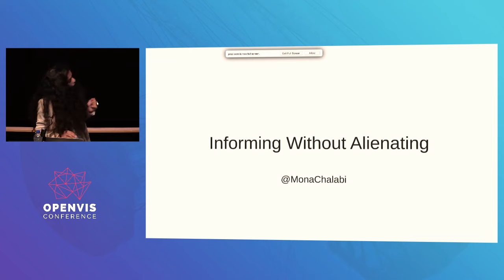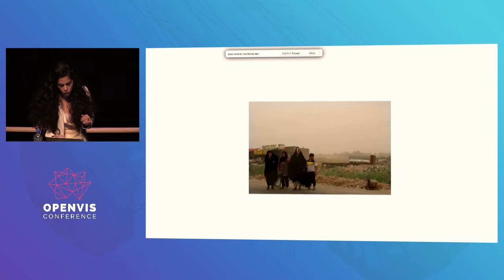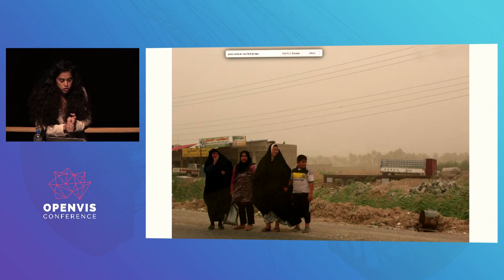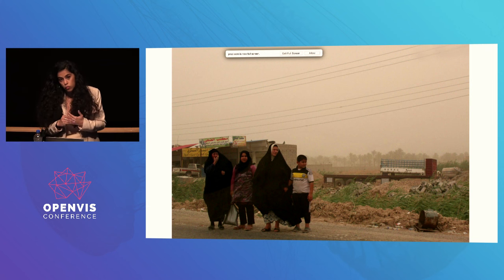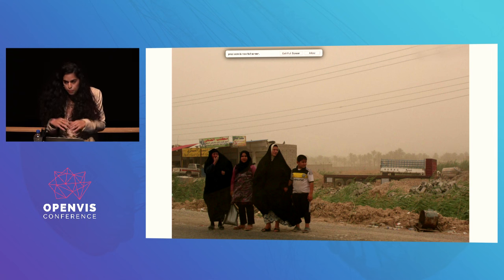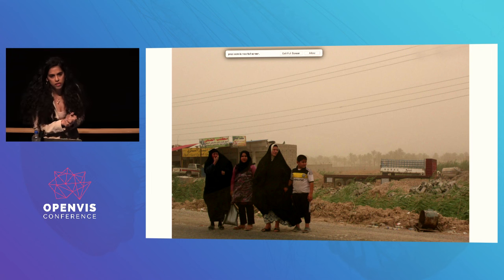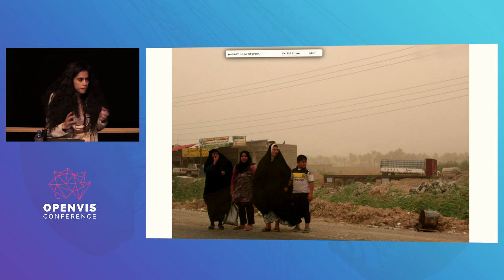In 2010, I started working for the statistics department of the International Organization for Migration. I was working in the Iraq office trying to keep track of how many families had become refugees as a result of the war, and how many were displaced within the country. More importantly, I was trying to understand what those families needed — whether they needed water, education, food — what they needed to basically stay alive.